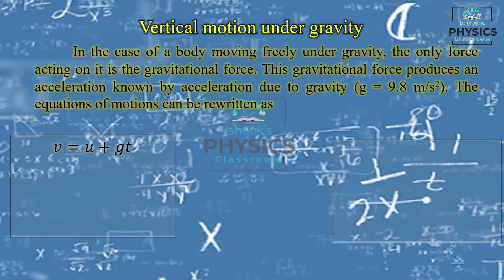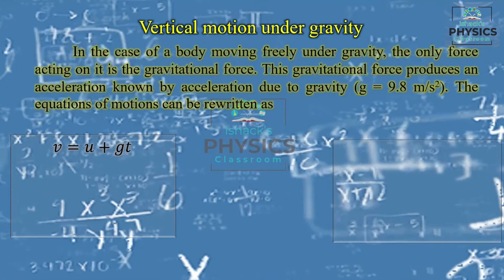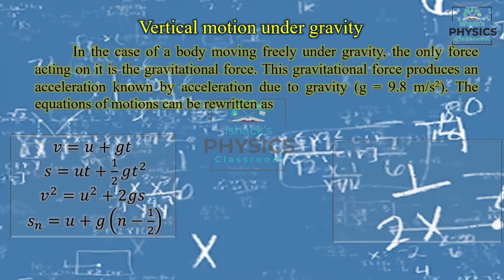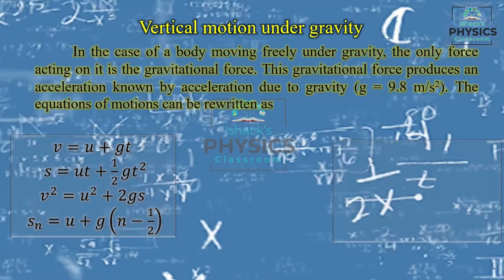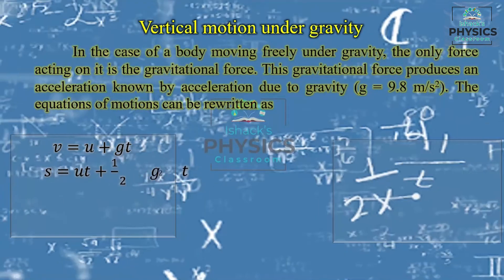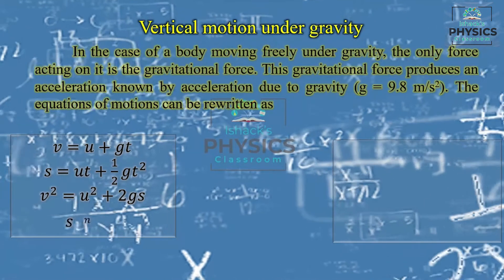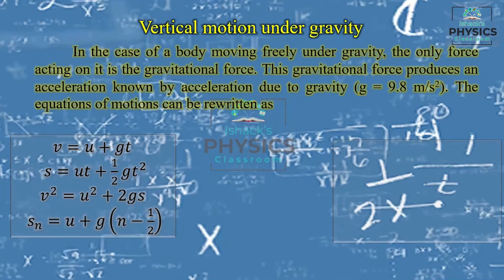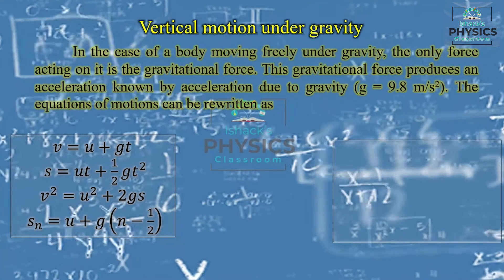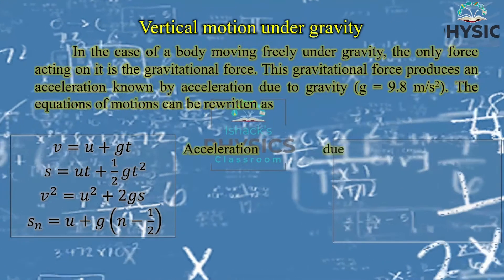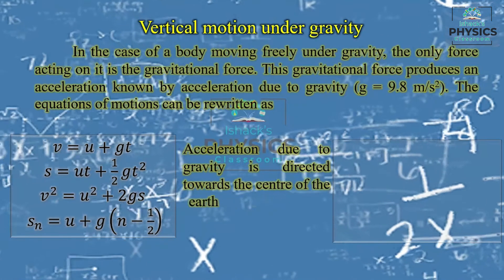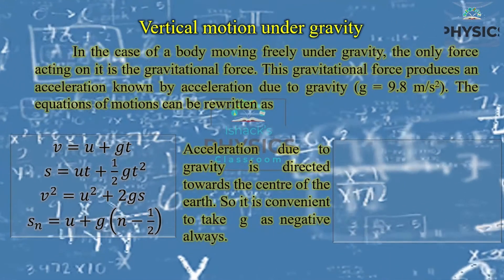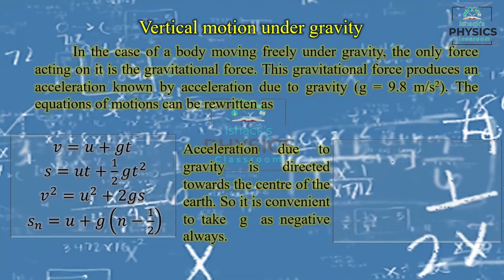Replacing a with g, the equations become: v = u + gt, s = ut + ½gt², v² = u² + 2gs, and Sₙ = u + g(n - ½). Access to gravity is directed towards the center of the earth, so it is convenient to take g as negative always. In schools, downward is taken as positive and upward as negative, so g is always negative.